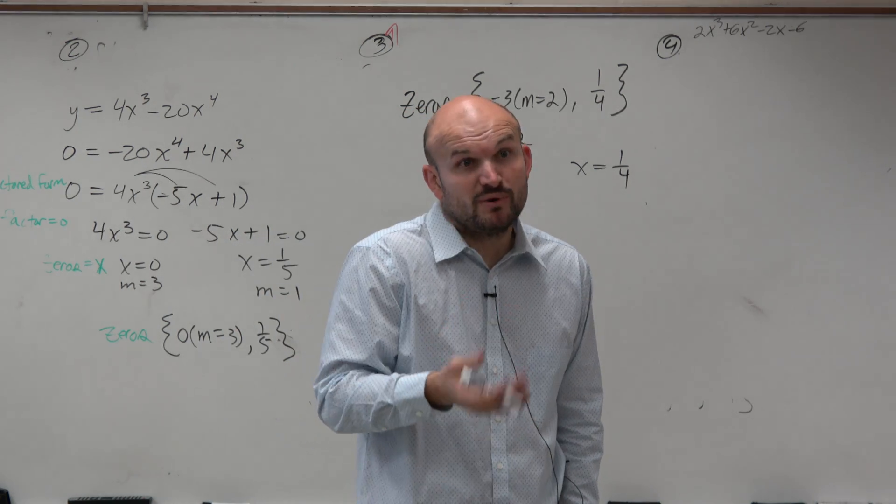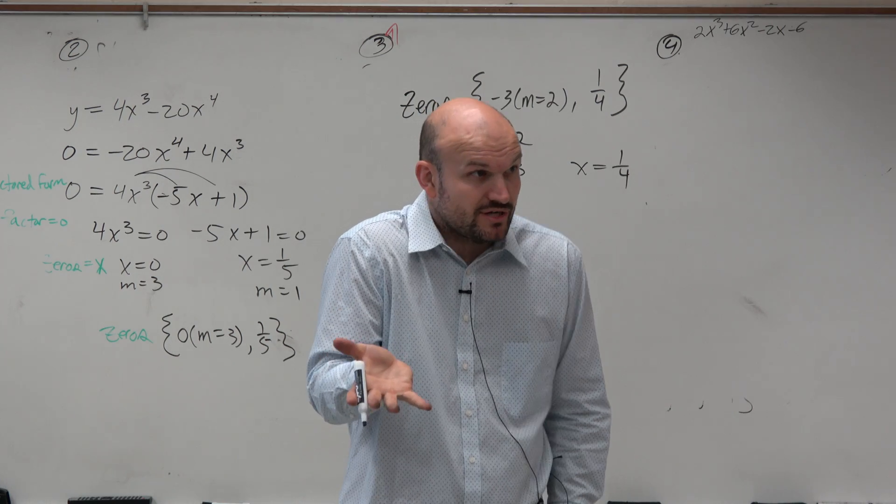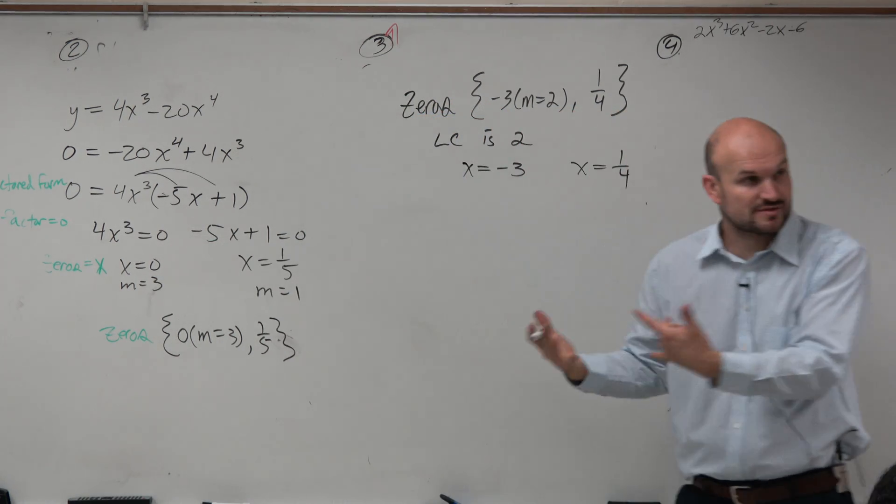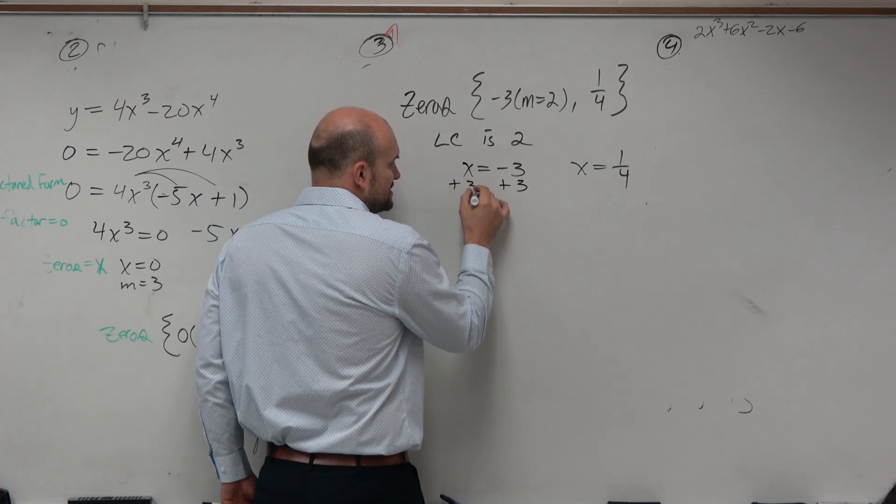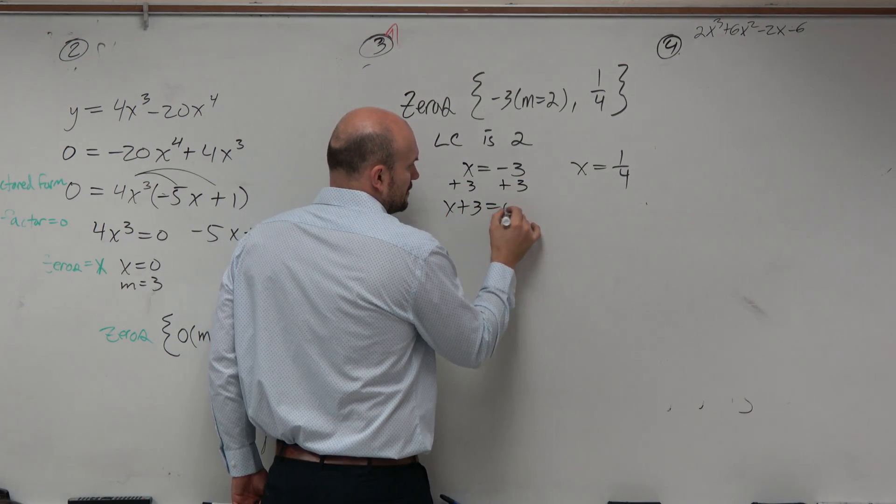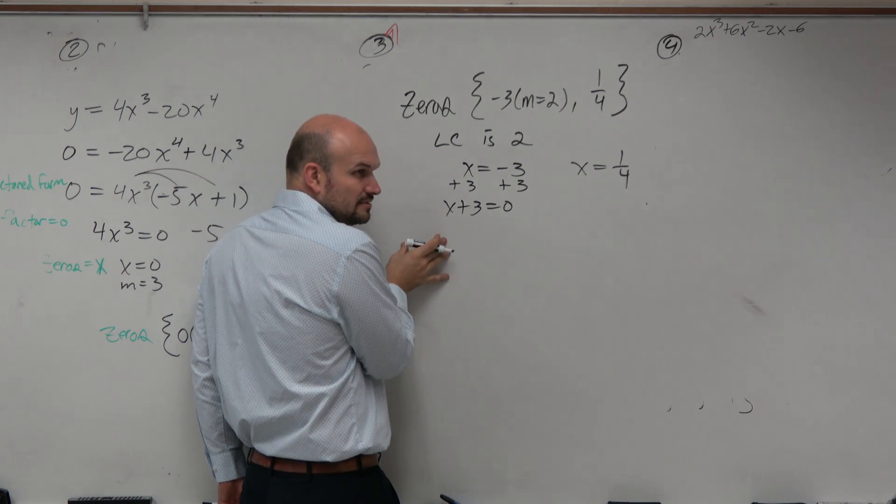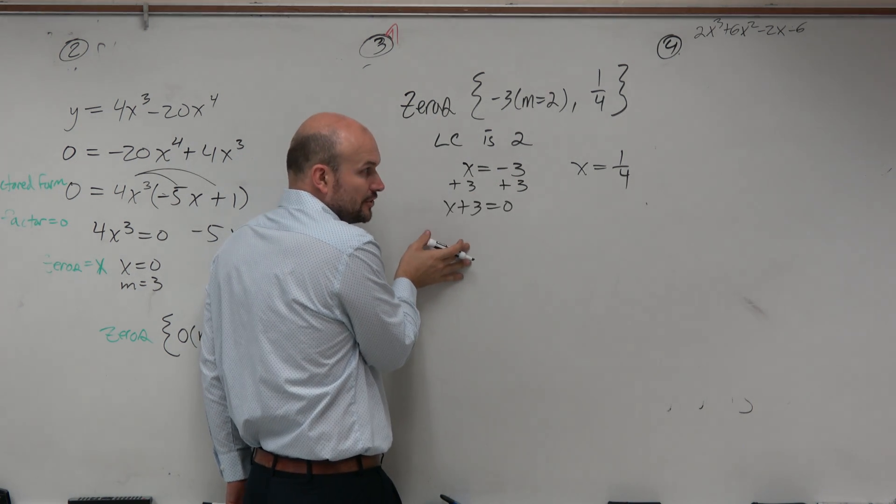Now what we want to do is we want to find the factor. Where did we get those zeros? Well, we got them because they came from factors that were set equal to zero. So what I'm going to do is just set them equal to zero. That's now the factor that x equals negative 3 came from. Agreed?